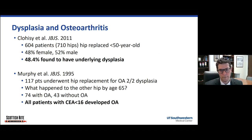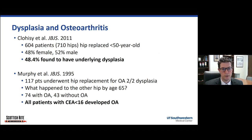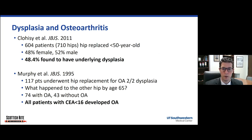Murphy's group out of England similarly looked at a little over 100 patients who underwent hip replacement for osteoarthritis with underlying dysplasia. They then looked at what happened to the other hip — not the one that was replaced, but what was deemed to be the other healthy hip — by age 65. About two-thirds of those patients went on to develop arthritis. And importantly, all of the ones that had significant dysplasia, so a center edge angle of 16 or less, developed arthritis.